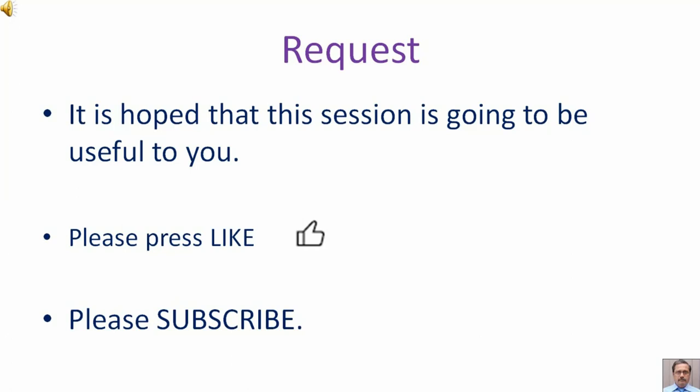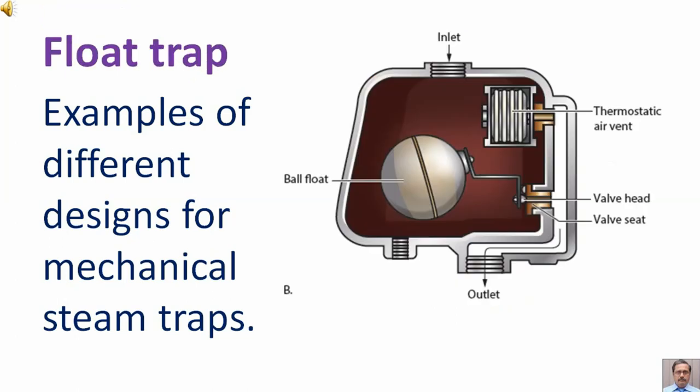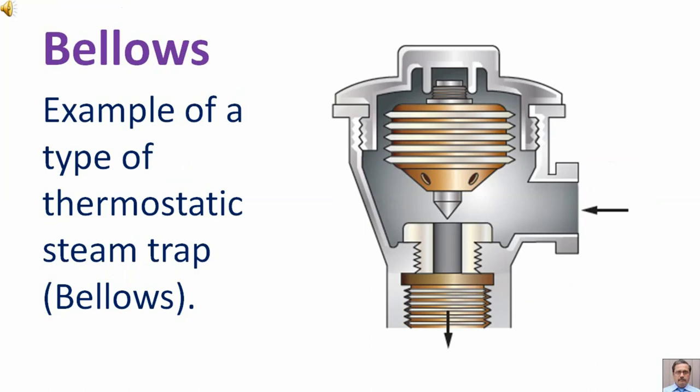Now we are giving you examples of different designs for mechanical steam traps. Here we are showing inverted bucket trap. Here we are showing float trap. Here we are showing bellows, an example of a type of thermostatic steam trap.